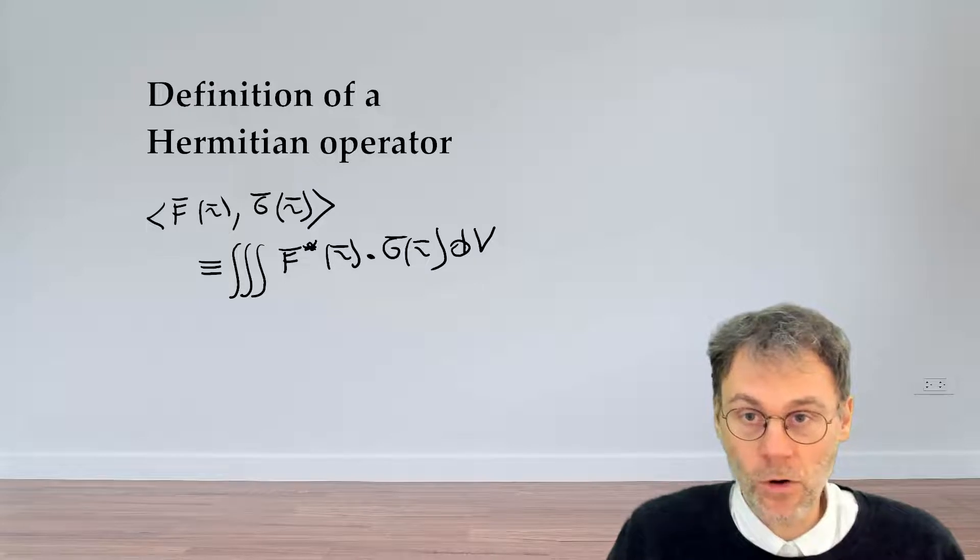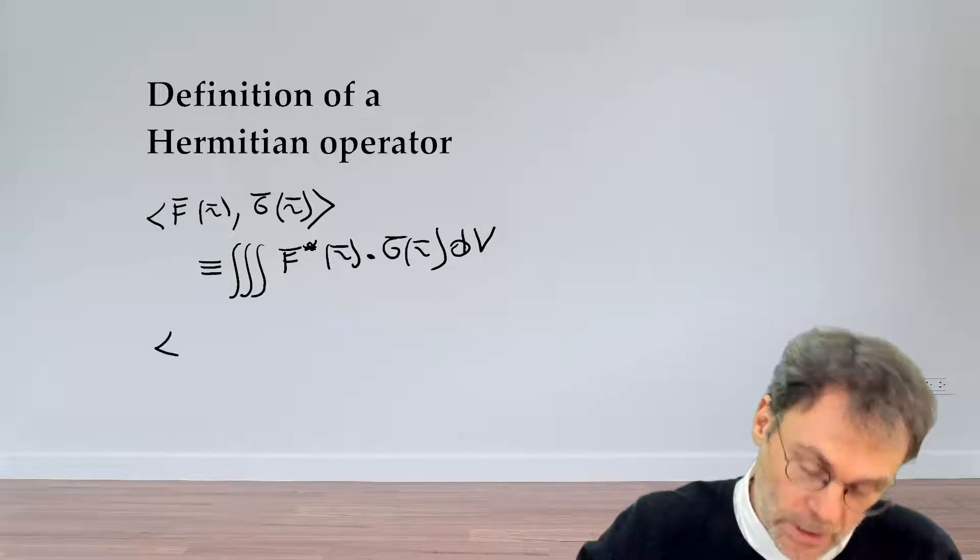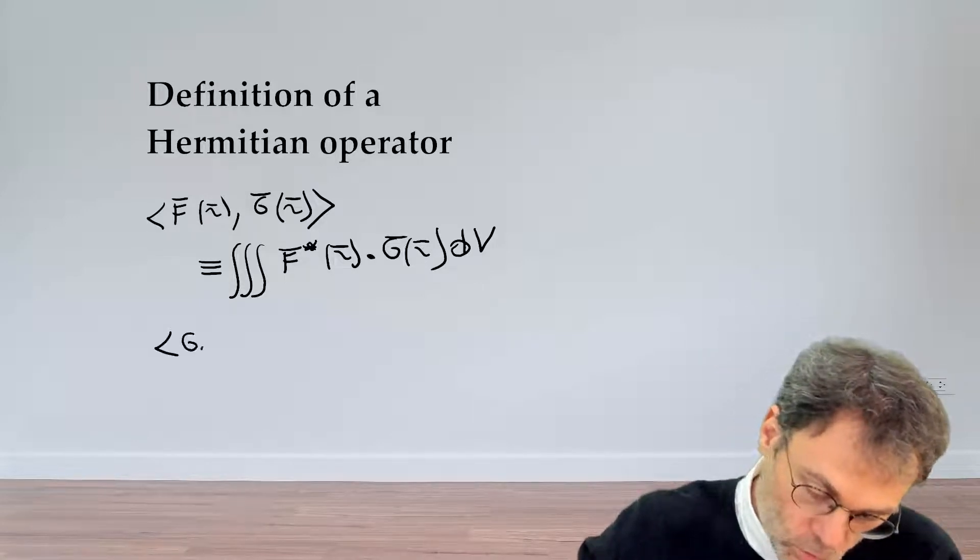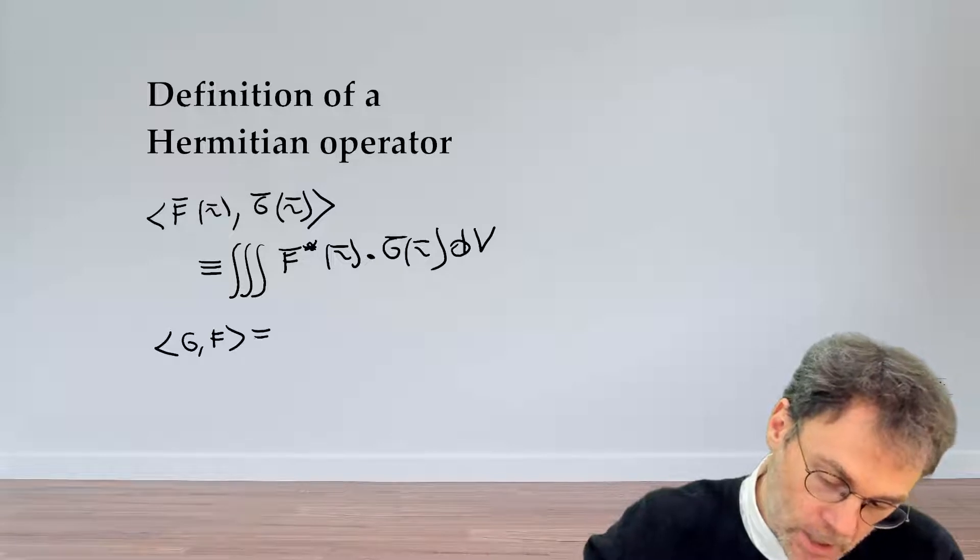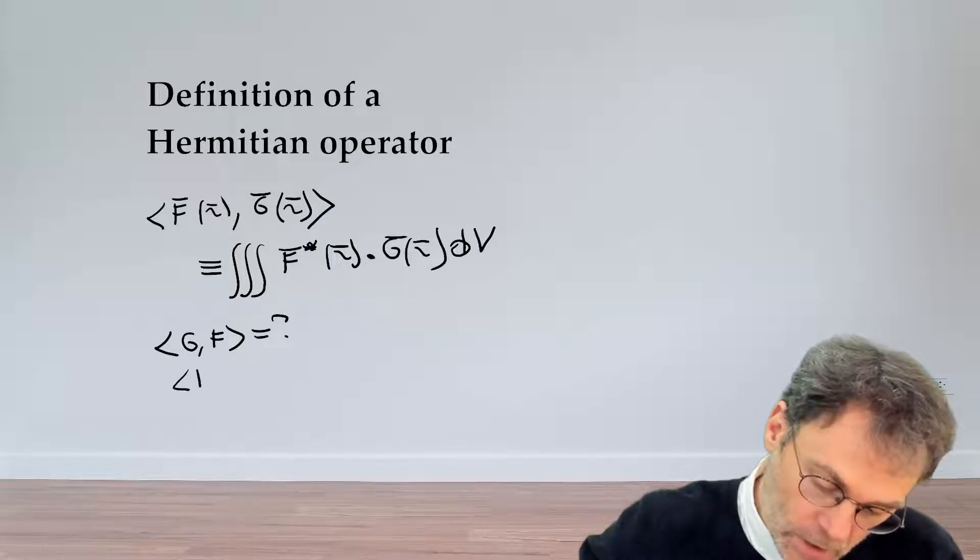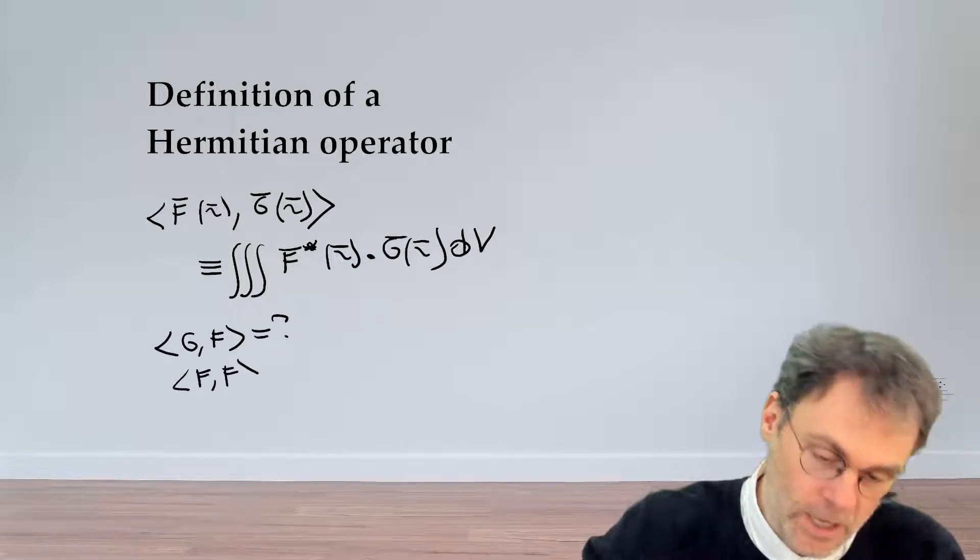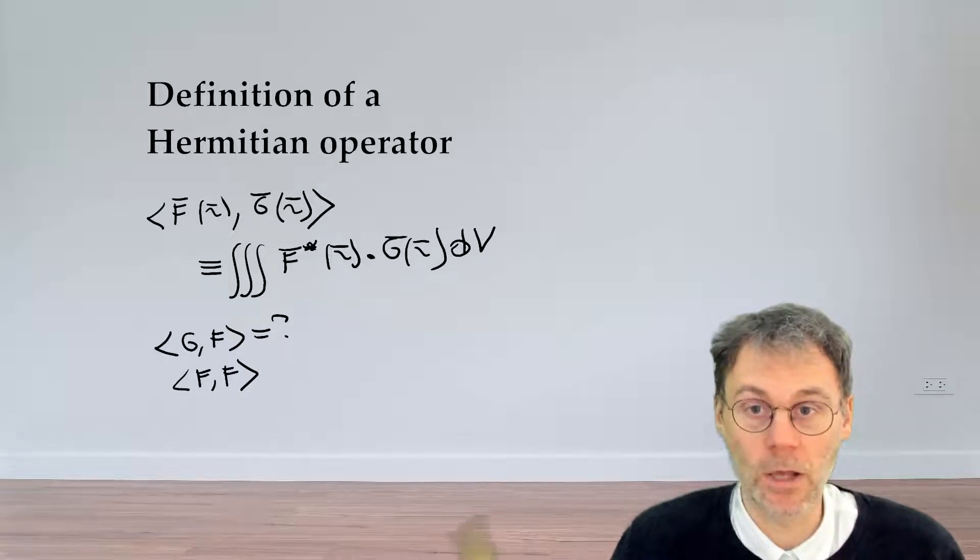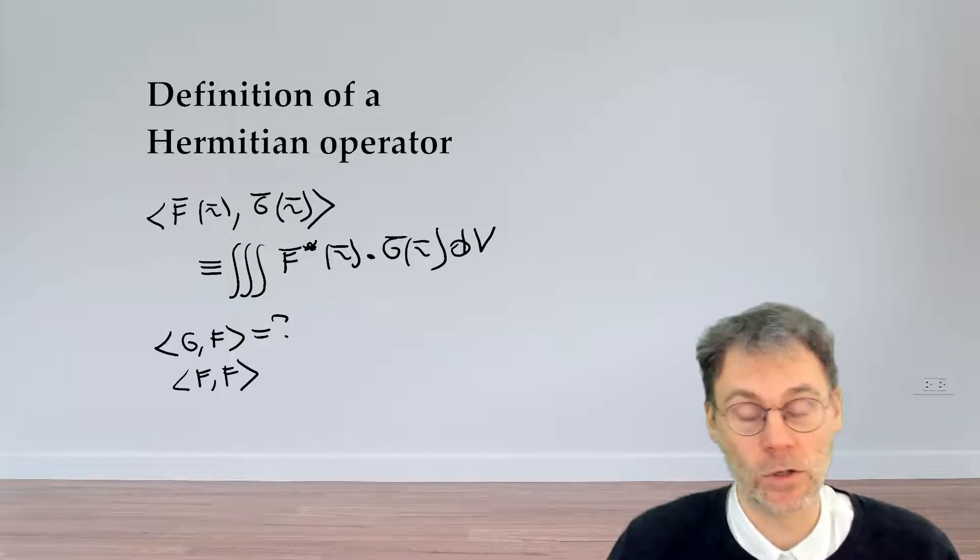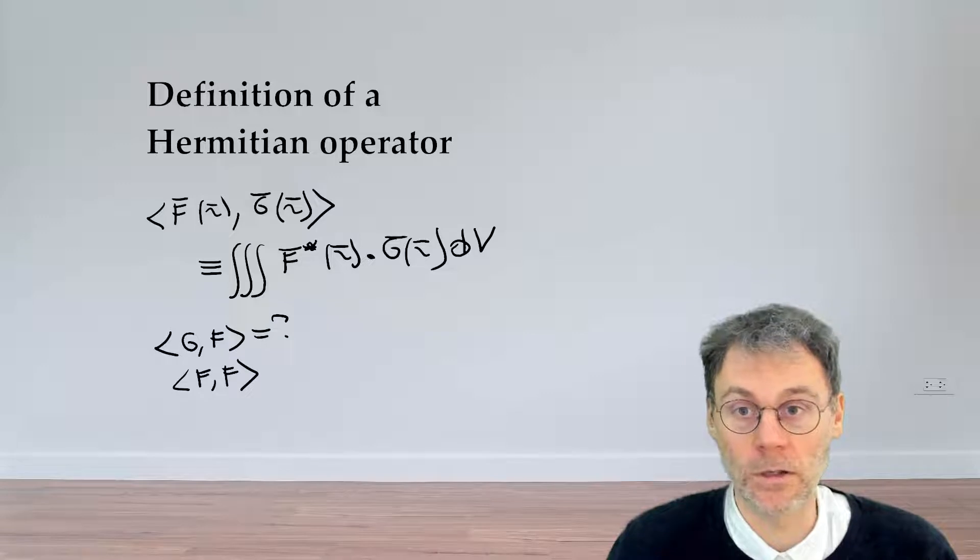Now pause the video and try to think about what that means in terms of commutativity. So what is this guy over here? And what can you say about the scalar product of a function with itself? Pause the video and see what you can derive based on the definition up there.